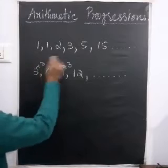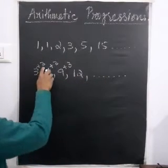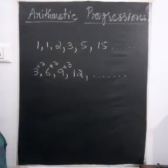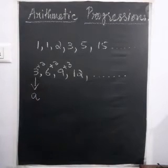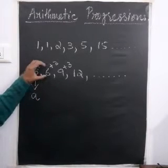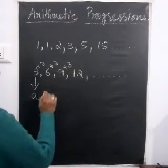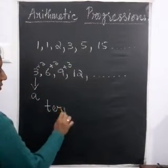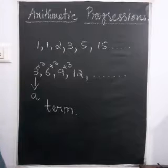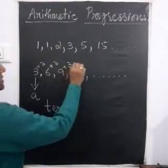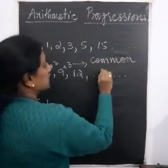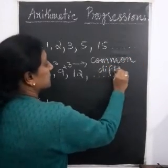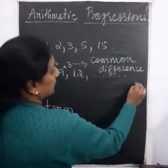So this is an AP. When there is a common difference between two successive terms, it forms an AP. In the AP, the first term is denoted by the letter A, and every entity of this series is known as a term. This common difference — here, 3 — is known as the common difference and is denoted by the letter D.